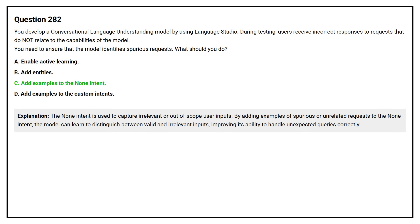The None intent is used to capture irrelevant or out-of-scope user inputs. By adding examples of spurious or unrelated requests to the None intent, the model can learn to distinguish between valid and irrelevant inputs, improving its ability to handle unexpected queries correctly.